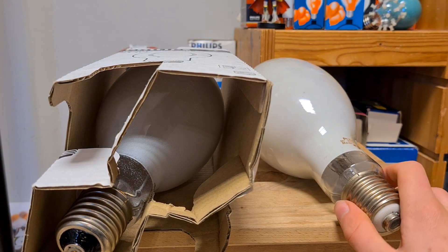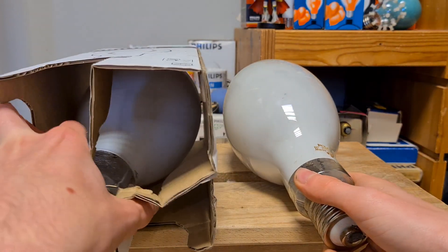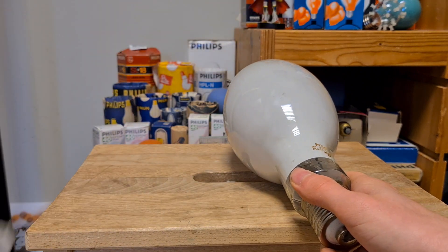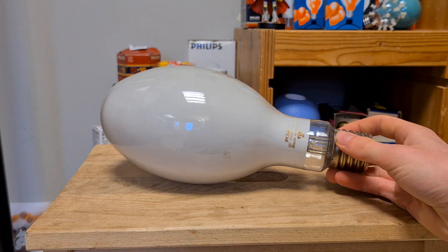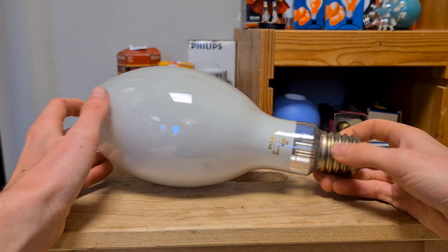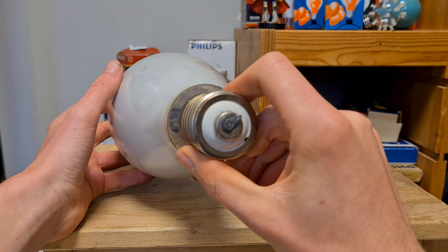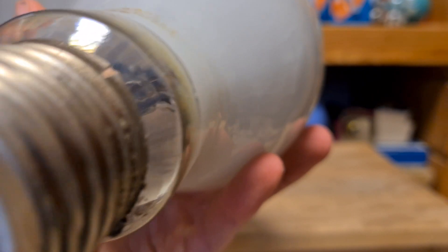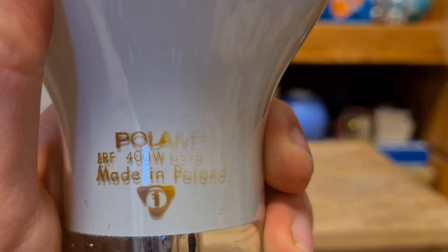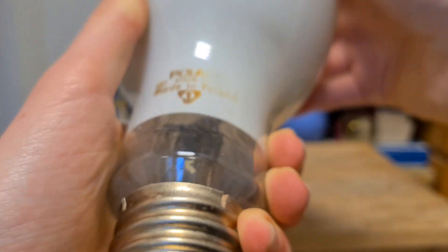Then we have the biggest bulbs in this list which are 400 watt mercury vapor and 400 watt high pressure sodium. Let's start with this one. As you can see this one is a bit bigger than the 250 watt high pressure sodium. Also E40 socket. This one doesn't work anymore, it's really black inside.